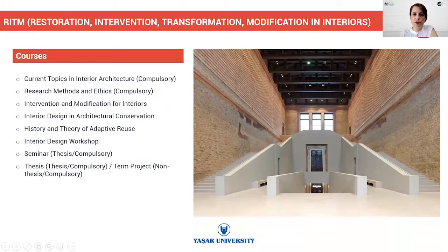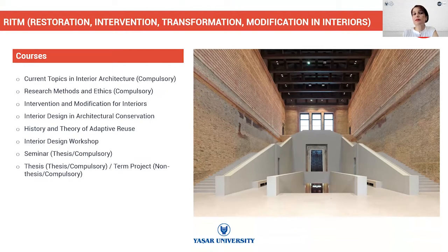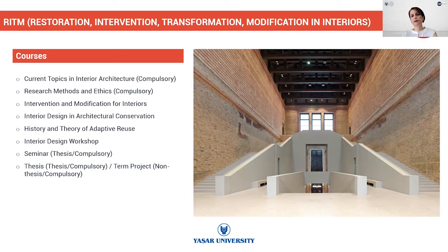These are the courses that this track offers. 'Current Topics' is a compulsory course for all tracks, and 'Research Methods and Ethics' is also compulsory. Other than those, we have elective courses from which you can choose — for example, intervention and modification, autonomy and optimization, interior design and architectural conservation, history and theory of adaptive reuse. And interior design workshop is a common elective course for all fields.